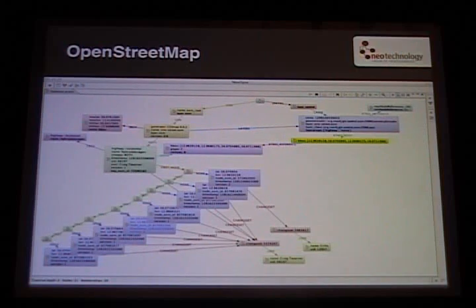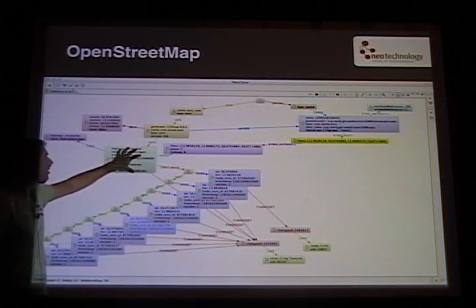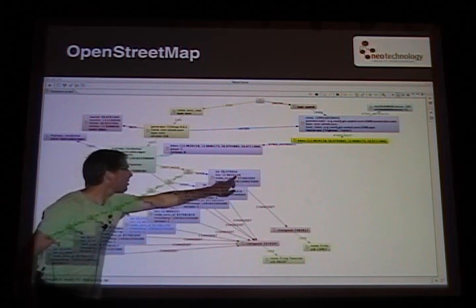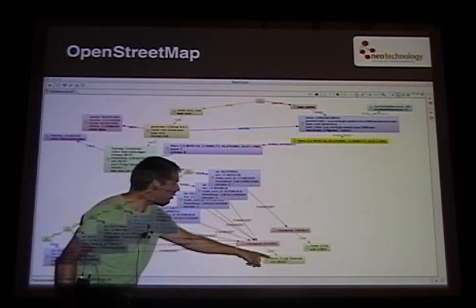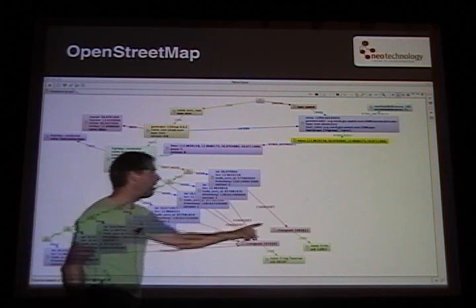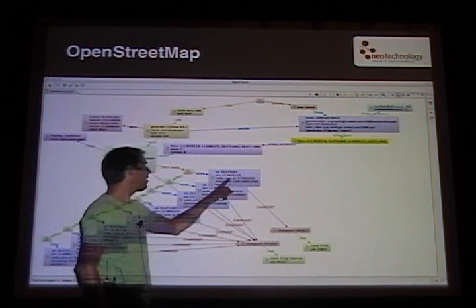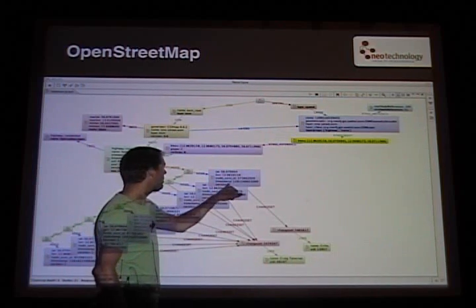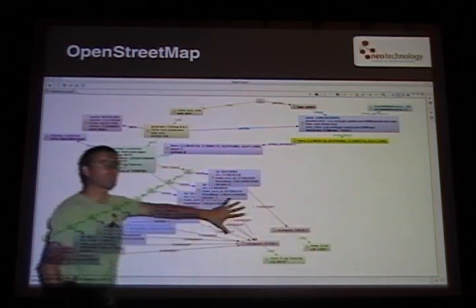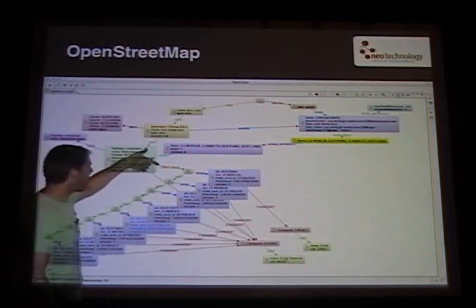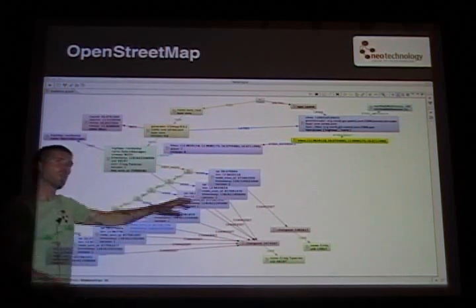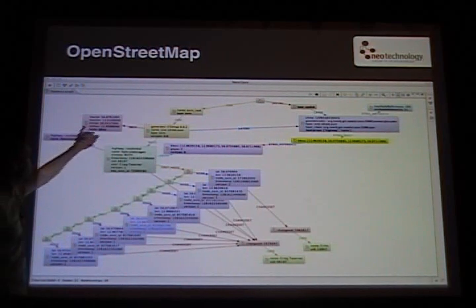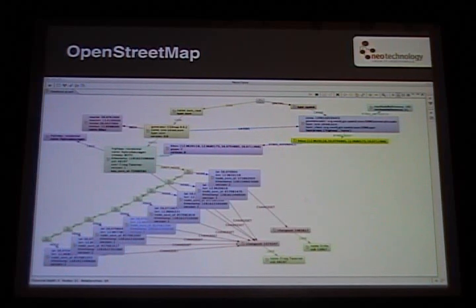OpenStreetMap is not just a spatial dataset for streets. It's like a Wikipedia for everything that might have spatial attributes. If you look at a street node, you have the first-node relationship, the waypoints belonging to change sets. The way is actually a traversal that goes down and grabs the nodes, transforming them into a line string. Then you have the tags. This is a basic OpenStreetMap dataset in Neo4j Spatial.